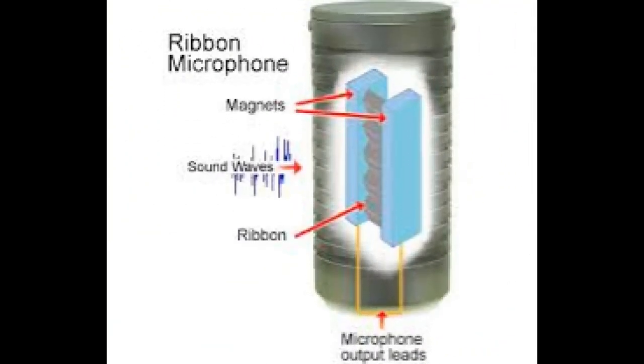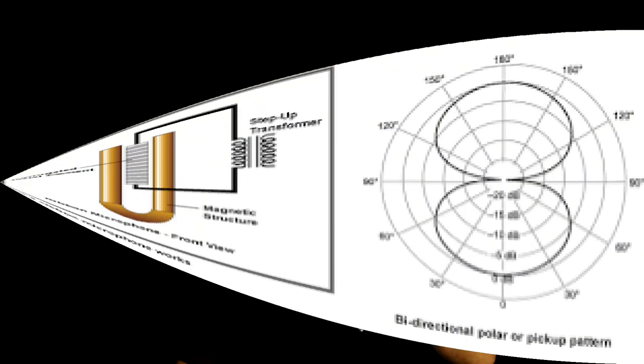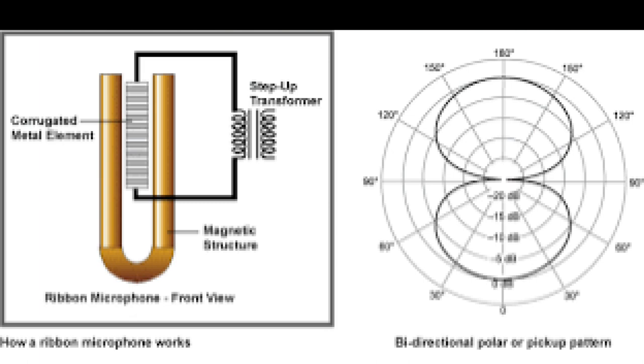The second kind of dynamic microphone is called a ribbon microphone. It uses a thin metal foil — the ribbon — suspended in a magnetic field, just like the diaphragm was. Sound waves vibrate that ribbon in the field and generate an electrical signal. A ribbon mic is much more sensitive than a regular diaphragm dynamic mic because that ribbon can be so thin. Most dynamic mics are directional, but ribbon mics are normally bi-directional — there are two sides to that ribbon and it can pick up sound from both sides.